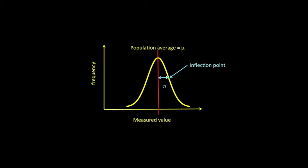This distance is called the standard deviation for the data set. Note that it has the same units as the measured value. We use the Greek letter sigma to represent the standard deviation of a very large population.